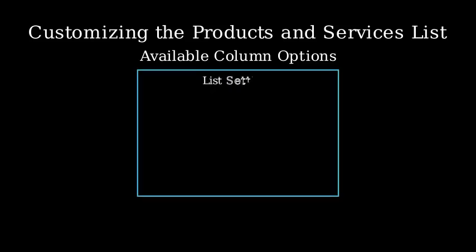Welcome! Today we'll learn about customizing the columns shown in your products and services list using the list settings gear icon. Let's look at the different columns you can choose to show or hide in your products and services list. Here's what the list settings interface typically looks like.